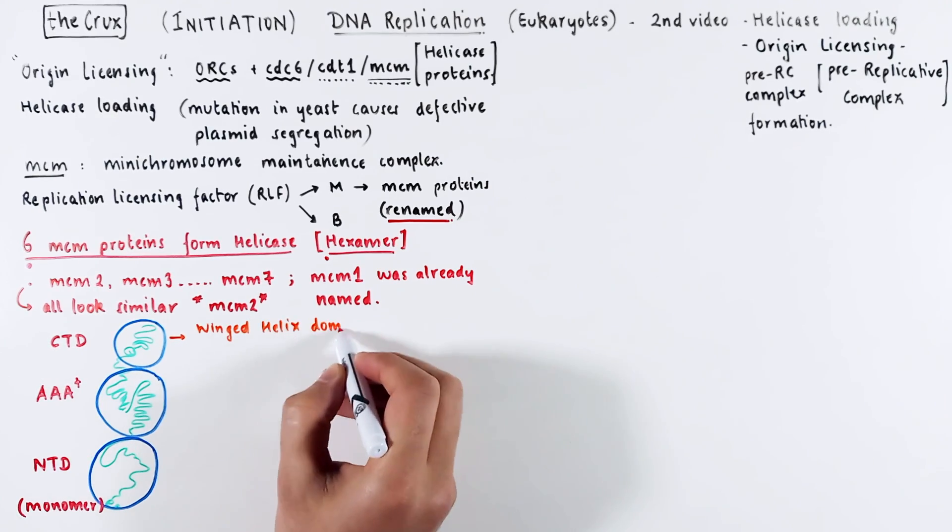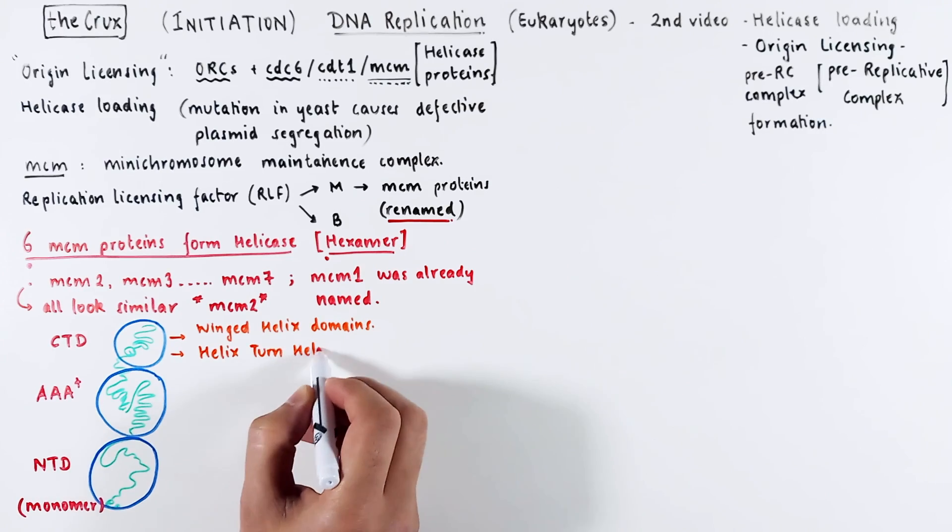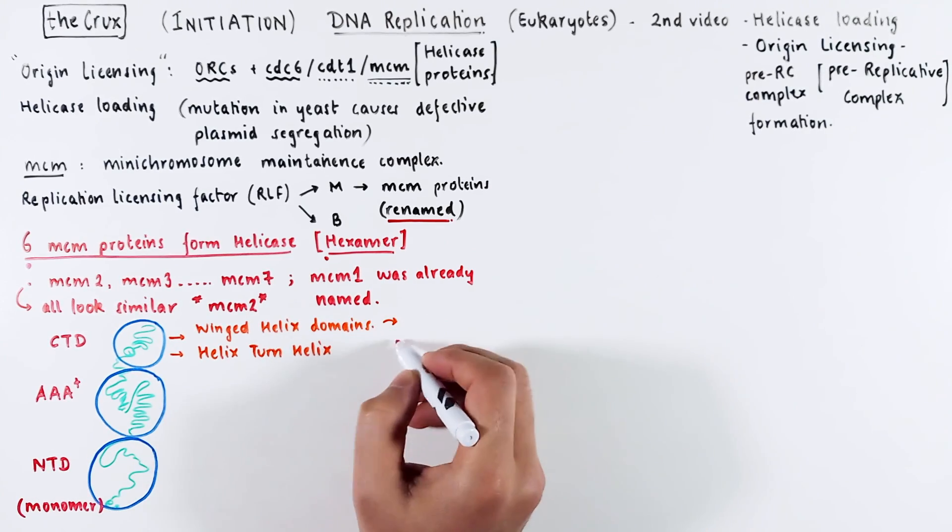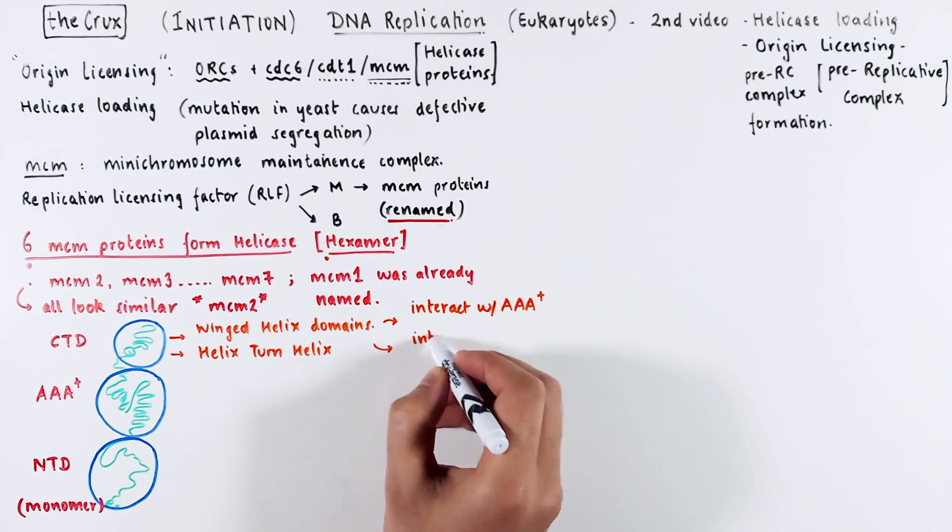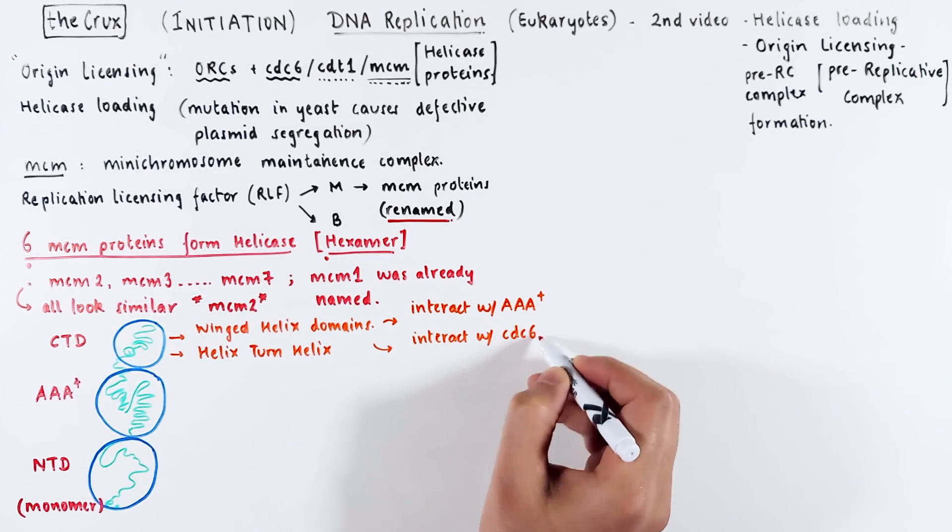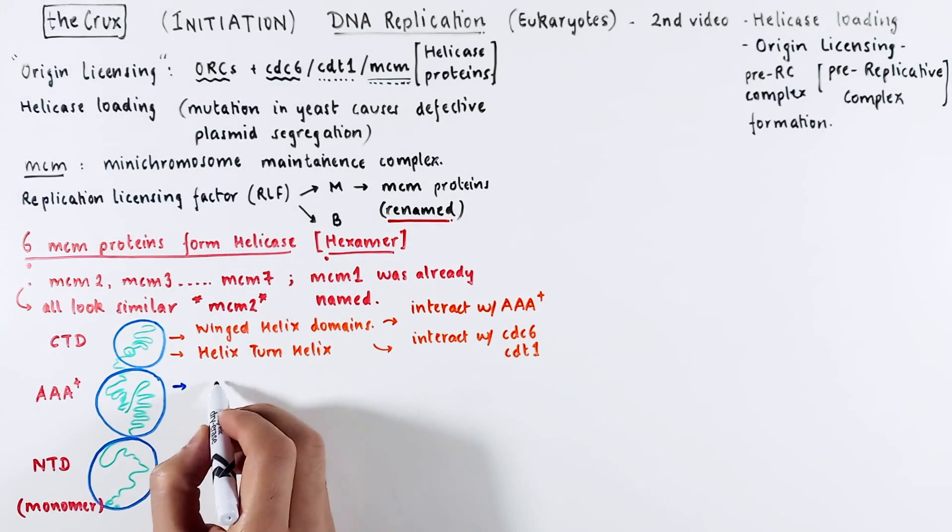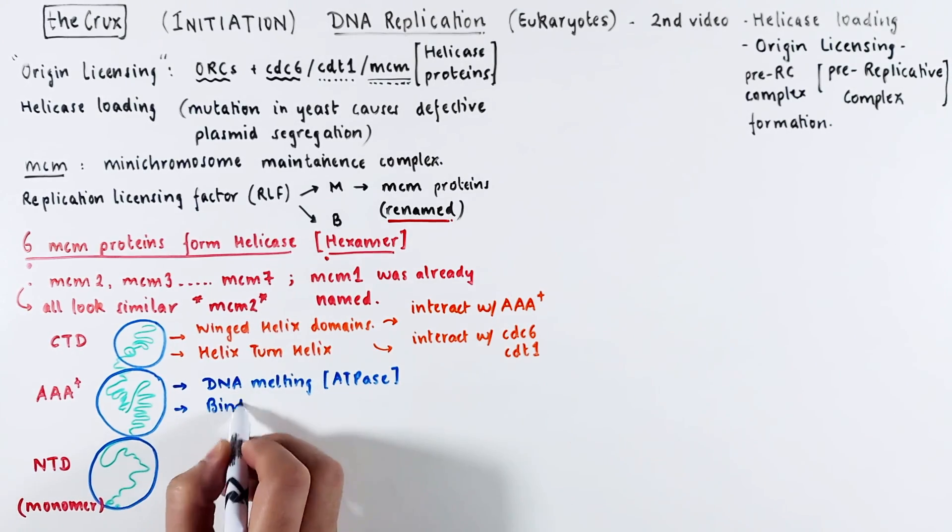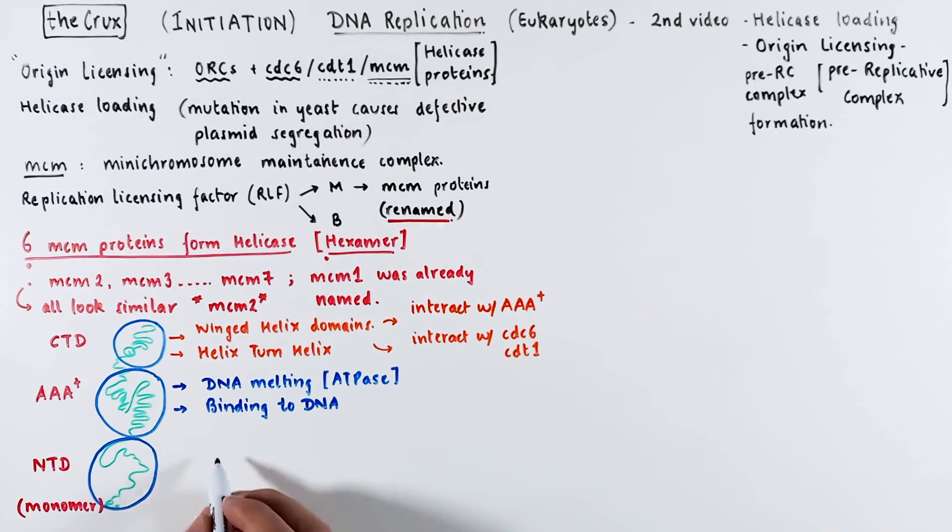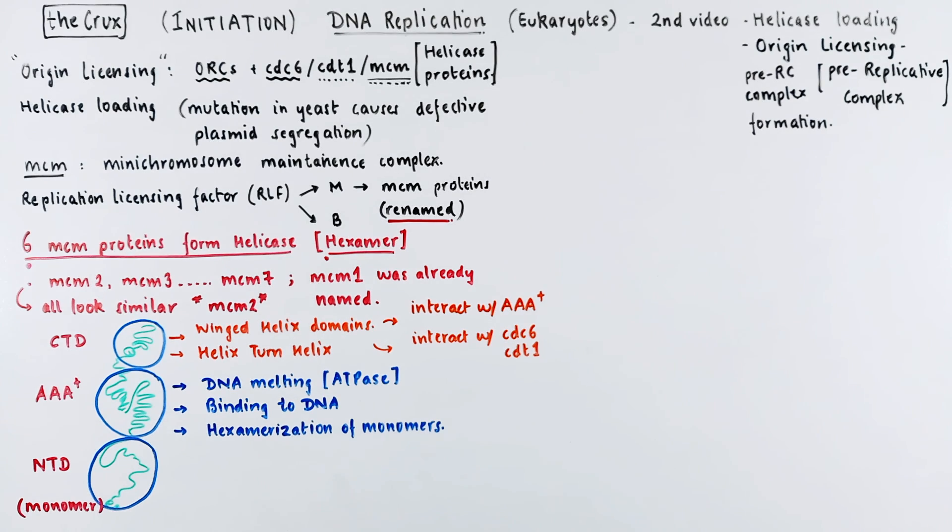The C-terminal domain contains winged helix domains and some other helix regions that bind the DNA. More importantly, these domains interact with the AAA plus domains of other proteins. They also interact with CDC6 and CDT1. The middle domain is heavily involved in DNA melting, which of course requires ATPase activation. This means that it also binds the DNA. It also helps in the hexamerization of monomers to form a functional hexamer.